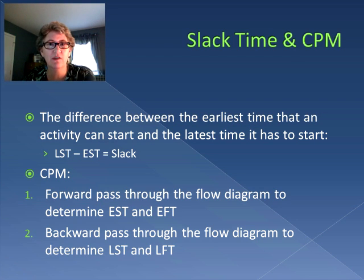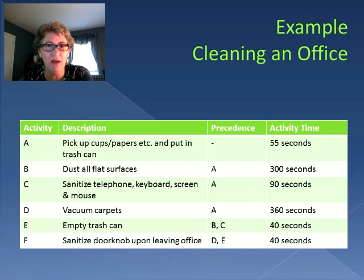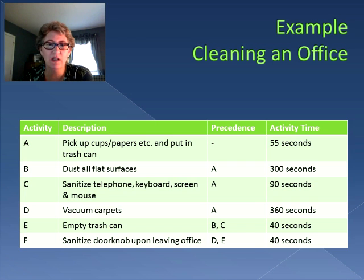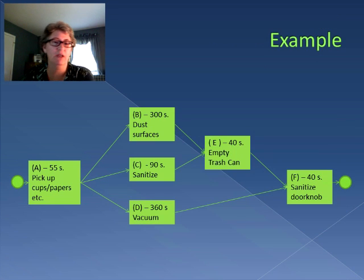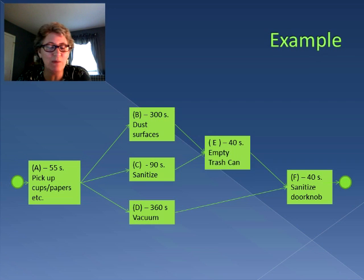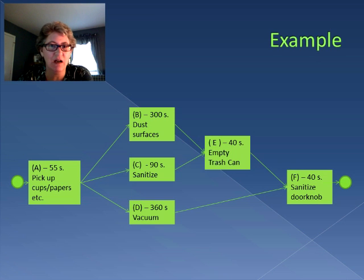We're actually going to use the same example from the critical path problems before, where we're cleaning an office. If you recall, there were six activities, each with different times, and when we put it together we had a process flow diagram. There were three potential paths through the process: ABEF, ACEF, and ADF, and each path had a different amount of time. So what we need to do is figure out how much delay time we have for different activities in this process.